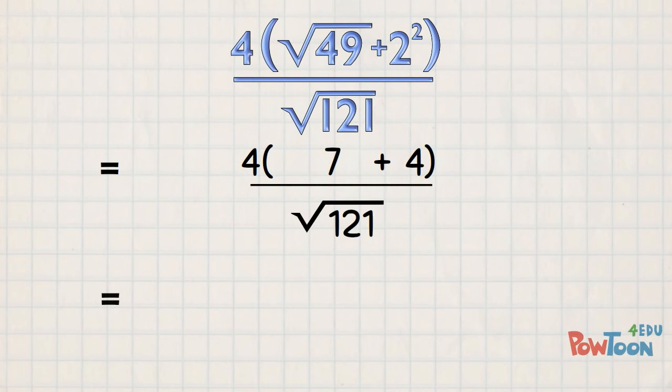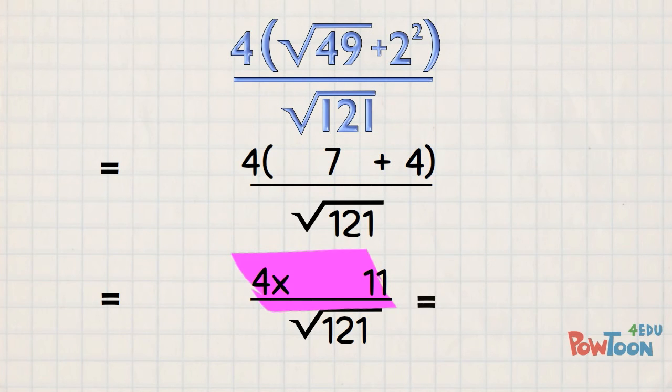Next line, 7 plus 4 is 11. And complete the terms! Now, the last step on the top line is to multiply by 4. And 4 times 11 is 44.